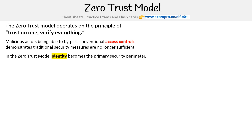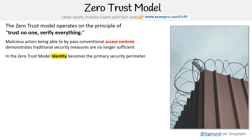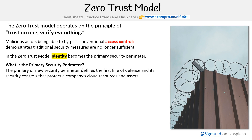With the zero trust model, identity becomes the primary security perimeter. You might be asking what we mean by primary security perimeter — the primary, or new, security perimeter defines the first line of defense, and its security controls protect a company's cloud resources and assets.